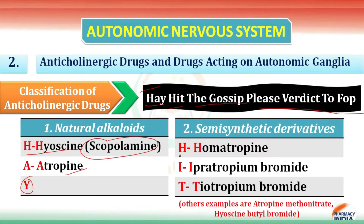The next class is semisynthetic derivatives. H stands for homatropine, I for ipratropium bromide, T for tiotropium bromide. Other examples include atropine methonitrate and hyoscine butyl bromide. So 'hay' and 'hit' are now clear.